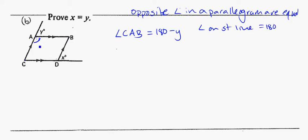So I could say here that this is 180 minus y, that angle there. Now, I can say that angle CAB is equal to angle CDB over here. My reason for that is the rule we just looked at. Opposite angle in parallelogram equal.